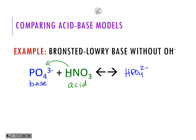Our first product is HPO4 with a minus two charge, because it goes up one from minus three. That's our first product. And then our other product is just nitrate, NO3 minus one. HPO4 hydrogen phosphate two minus is the conjugate acid, and nitrate is going to be the conjugate base. Hydroxide isn't part of this reaction at all - it doesn't have to be shown in all cases with Bronsted-Lowry bases.